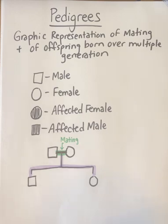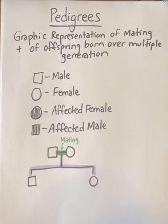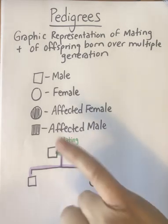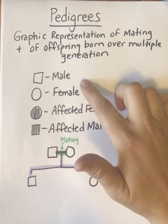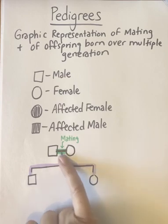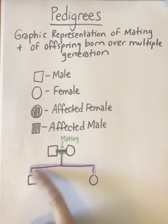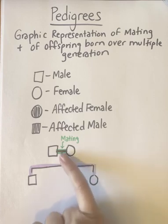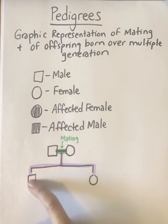Pedigrees are super important when you talk about dog pedigrees — who they come from. It really determines how much a full-blooded dog would cost. So when you take a male and a female and they mate, you draw a line in between them, and then coming off the line — shown here in purple — this represents their offspring.